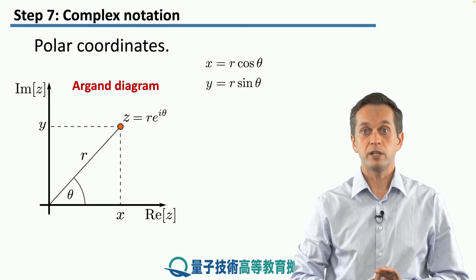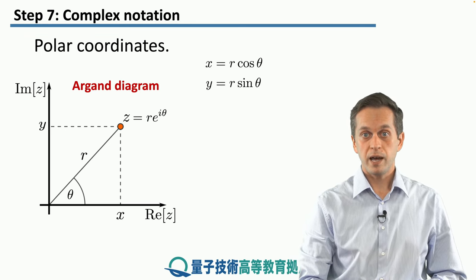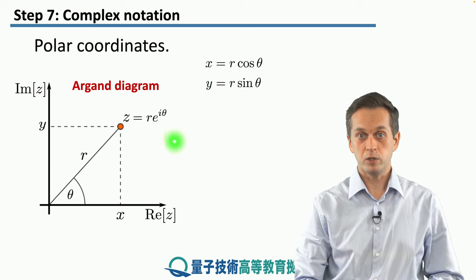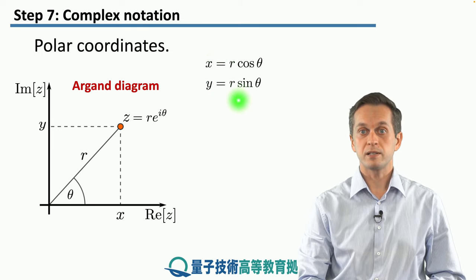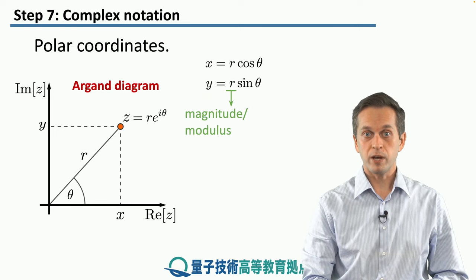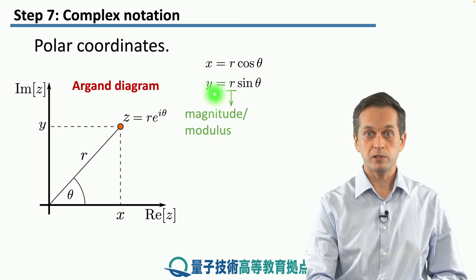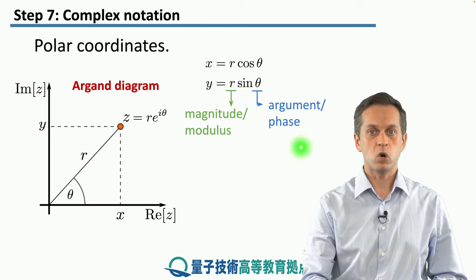How do we go between Cartesian and polar coordinates? That's quite simple. x in Cartesian coordinates is equal to r times cosine theta, and y is equal to r times sine theta, as you can see from the diagram. r is also referred to as the magnitude or modulus, and theta is sometimes referred to as the argument, but often we will just call it the phase.